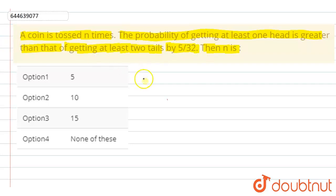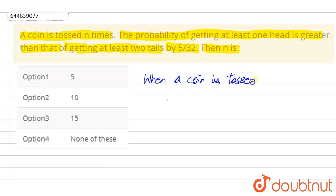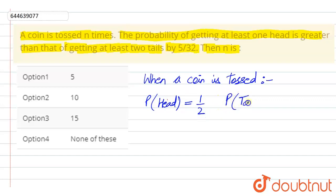We have to find the value of n. We know that when a coin is tossed, the probability of getting a head is 1/2, and the probability of getting a tail is also equal to 1/2.